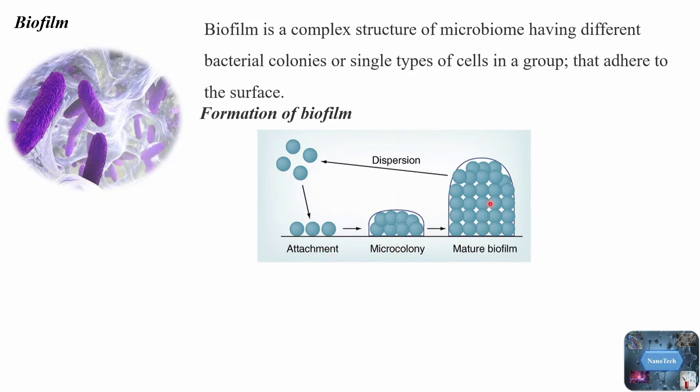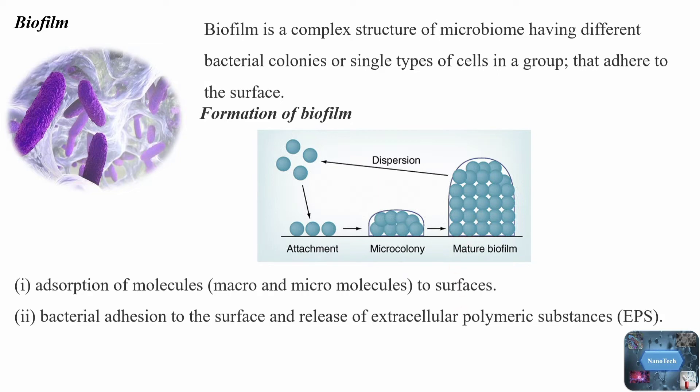Biofilms shield microorganisms not only from changes in pH, osmolarity, lack of nutrition, mechanical stress, and shear forces, but also by preventing bacterial biofilm communities from being accessed by antibiotics and the host's immune cells. Due to the additional resistance power that the biofilm matrix provides to bacteria, these bad bugs can now not only withstand harsh conditions but also become resistant to antibiotics, resulting in the emergence of multi-drug-resistant, extensively drug-resistant, and completely drug-resistant bacteria.